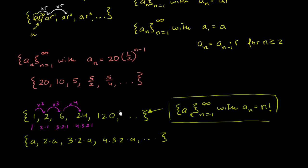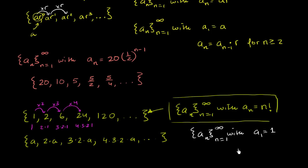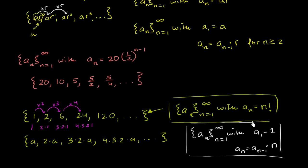We could also define this factorial sequence recursively: a_sub_n from n=1 to infinity, with a_sub_1 equal to 1 as the first term, and then each successive term equals the previous term times n. So the second term is the previous term times 2, and the nth term is the previous term times n.